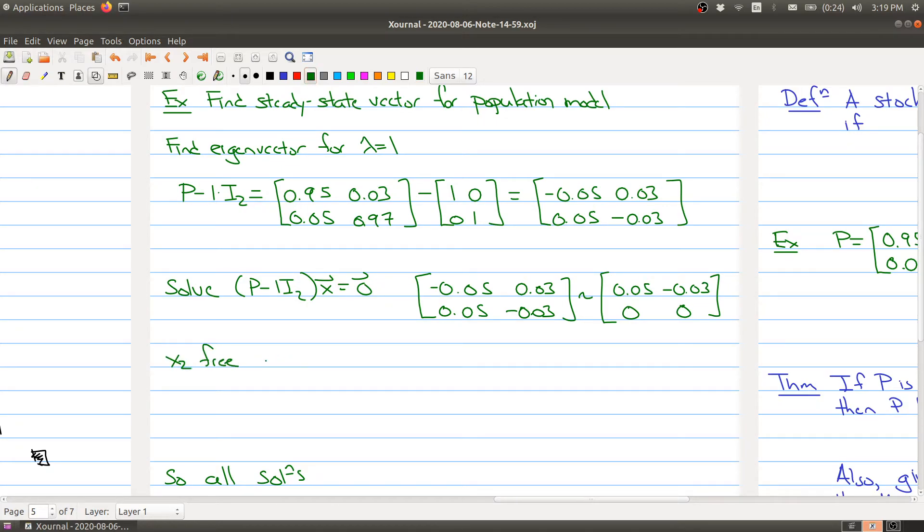X2 is free. So this implies that X1 is equal to negative 0.3 divided by 0.5, X2. And we can rewrite this as, sorry, there should be no negative here because I moved it to the other side, 3 fifths X2. All right.